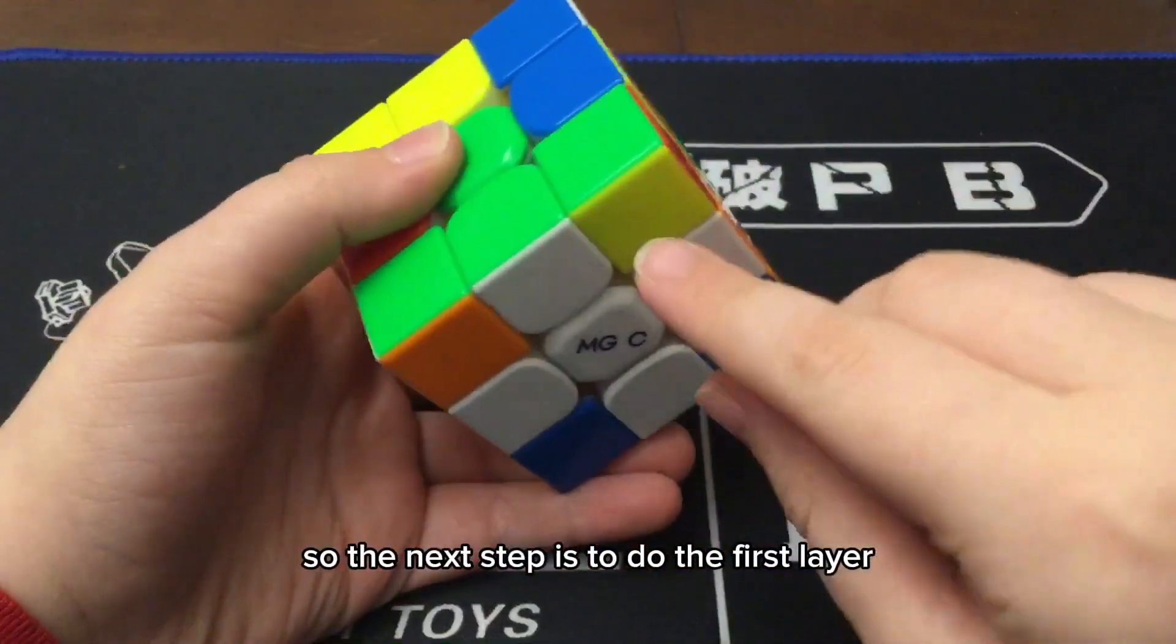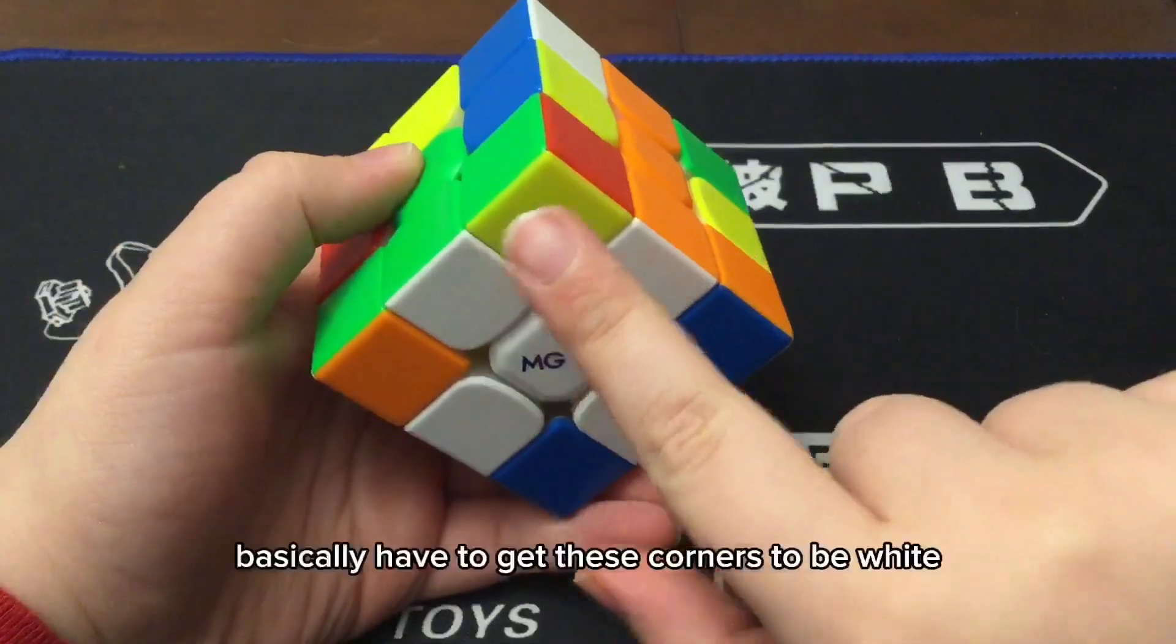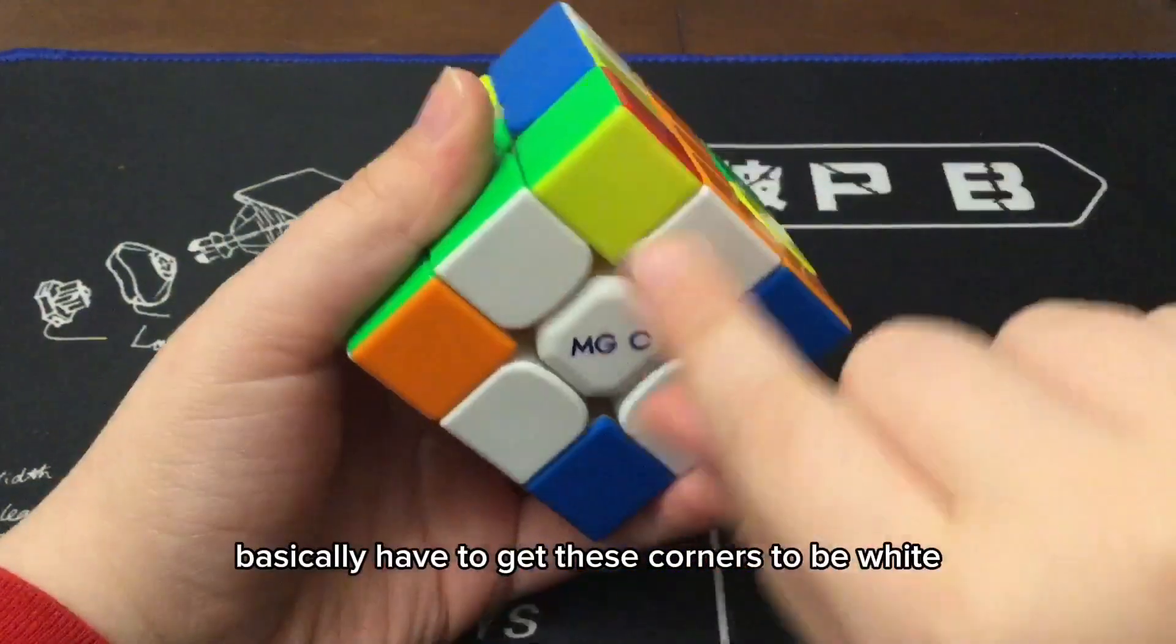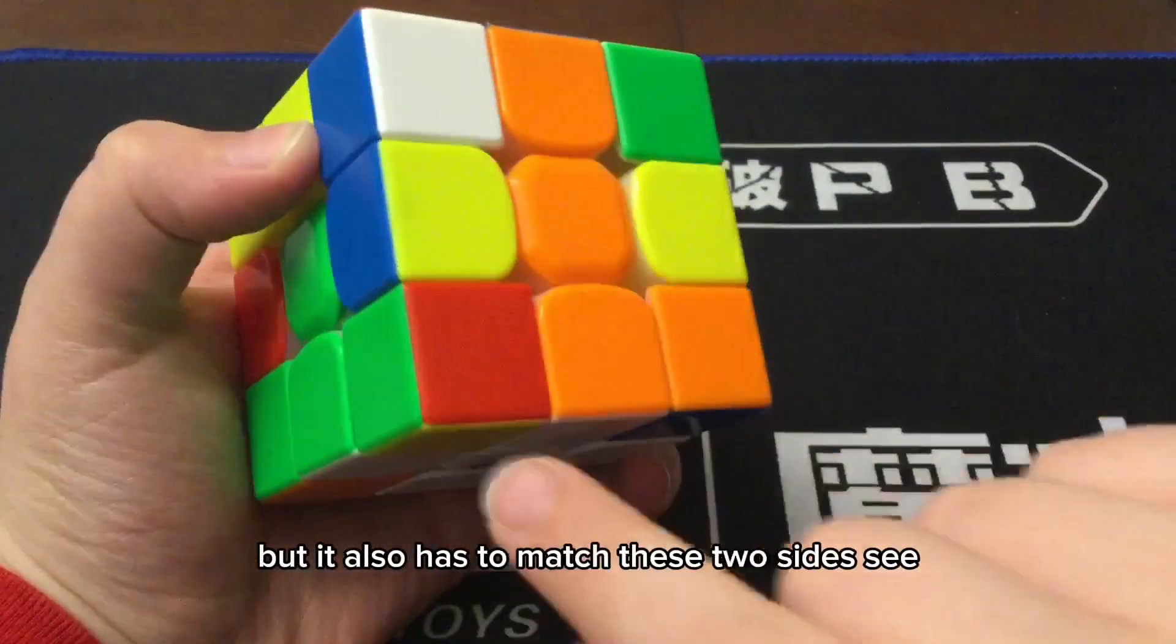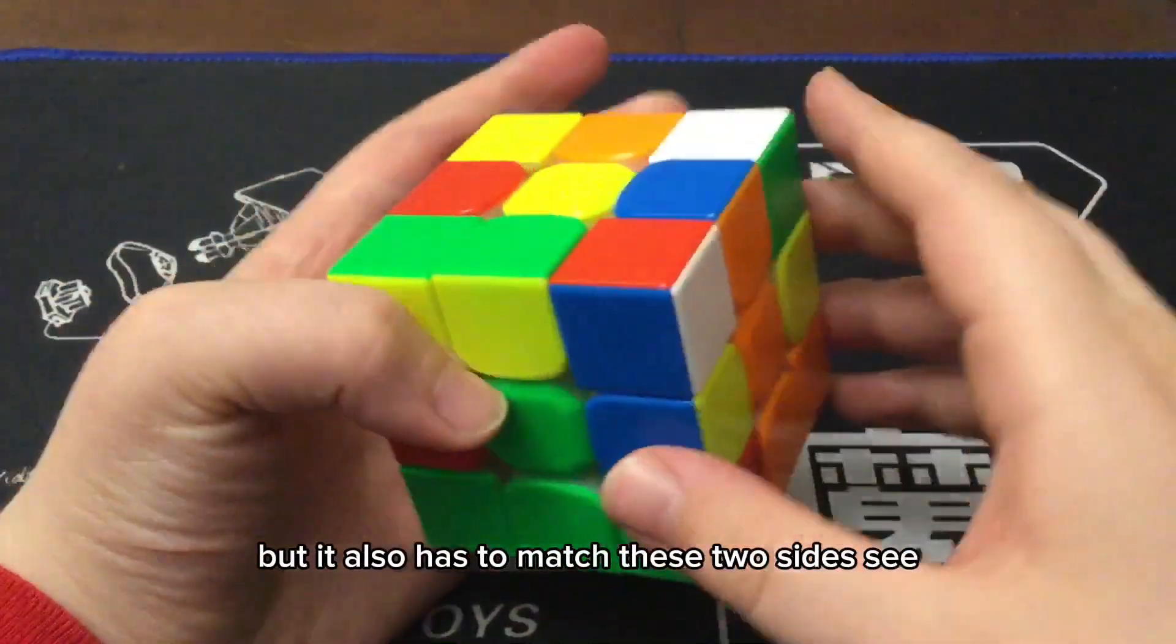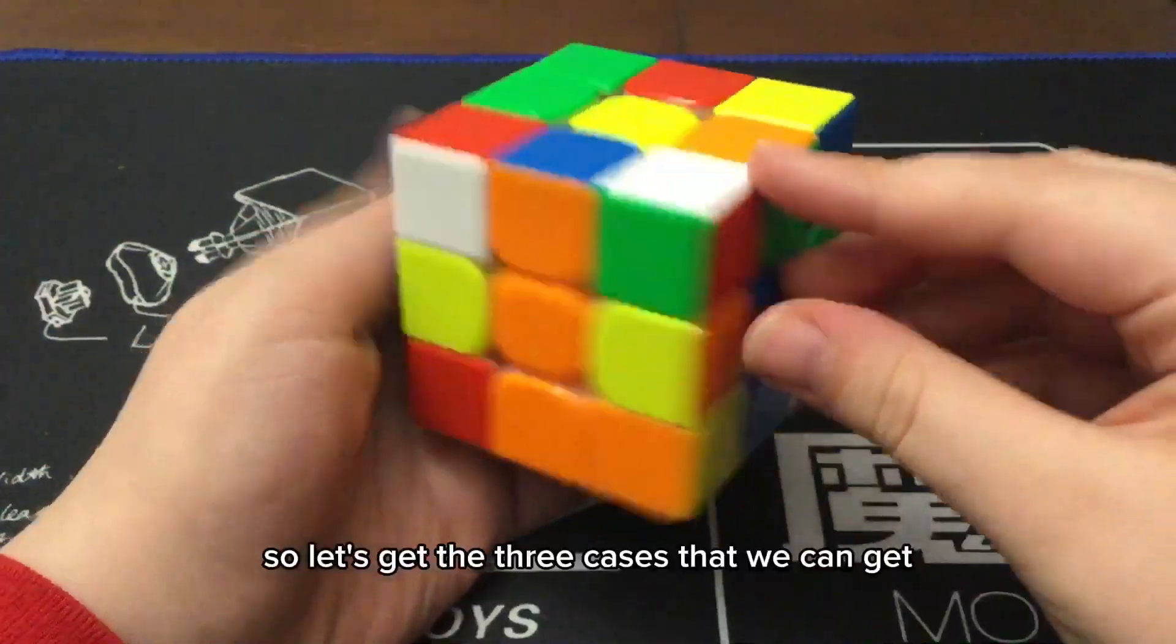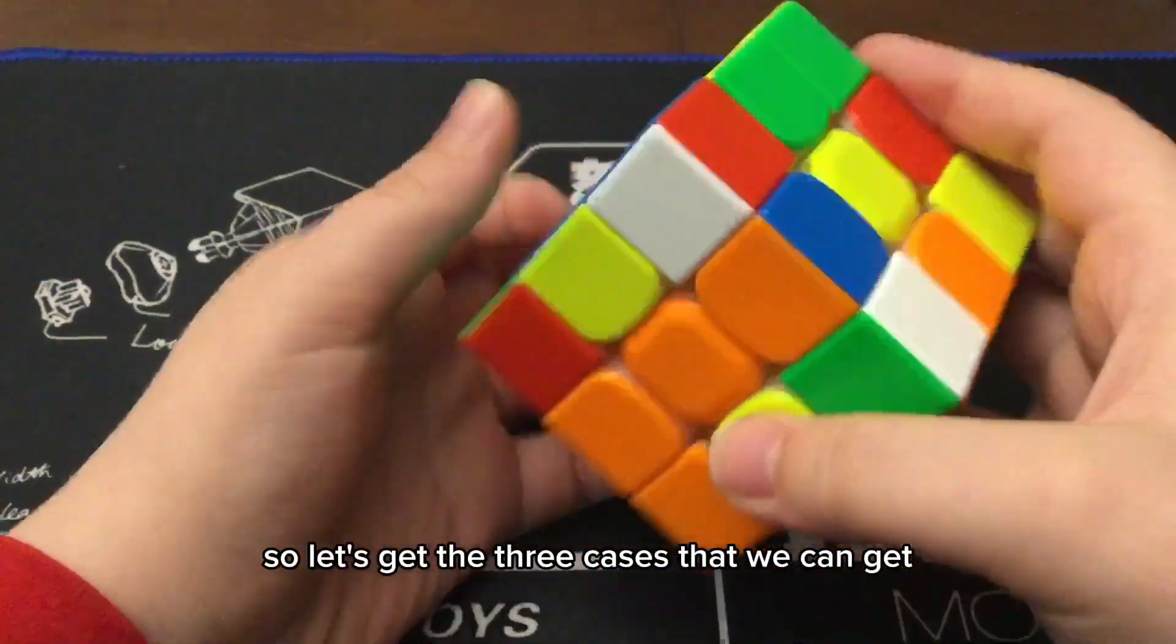So, the next step is to do the first layer. Basically, you have to get these corners to be white, but it also has to match these two sides. See? So, let's get the three cases that we can get.